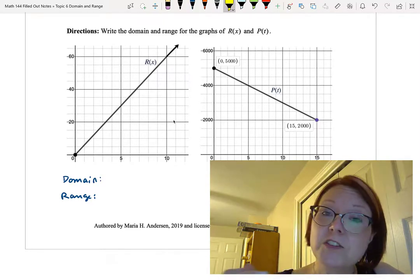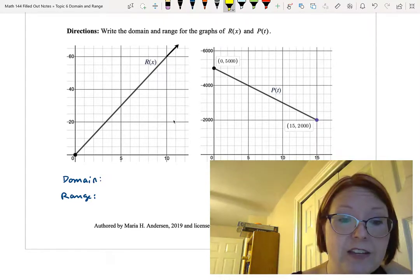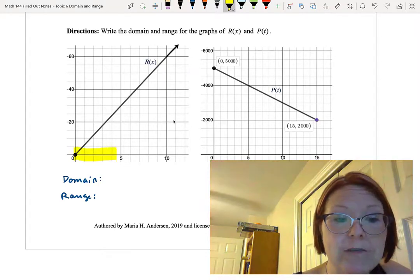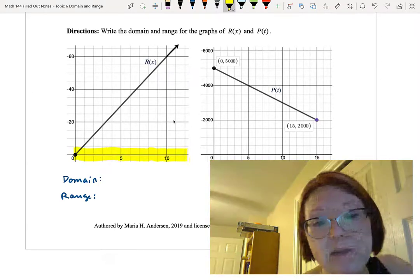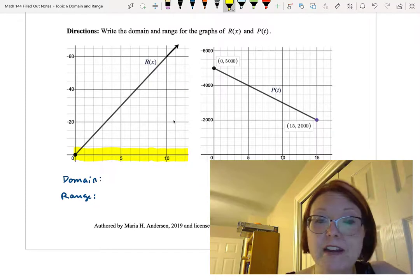When we think about the domain of this function, that's the allowed values of x, and we start at 0 and then we have allowed values of x going to the right and continuing to the right as far as the graph goes, which is till infinity.